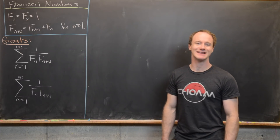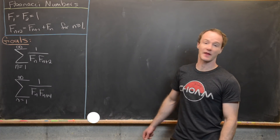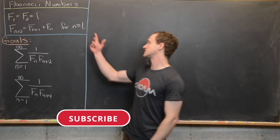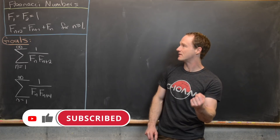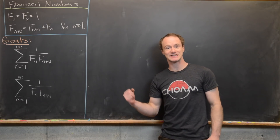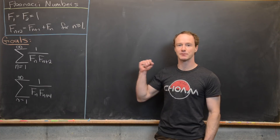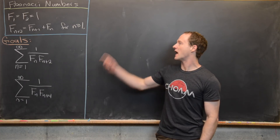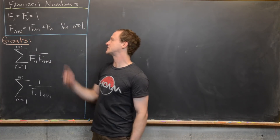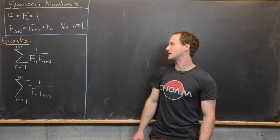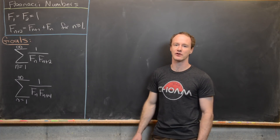Here we're going to look at some nice sum identities that have to do with the Fibonacci numbers. Let's recall that the Fibonacci numbers are defined as follows: the first Fibonacci number f₁ equals the second f₂, and both are equal to 1. Then we have the recurrence relation f_{n+2} = f_{n+1} + f_n, true for all n ≥ 1.